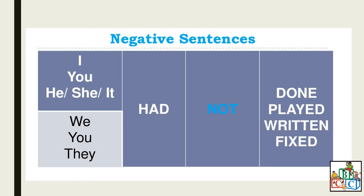For the negative sentences: I, you, he, she, it, we, they — 'had not' for the past perfect, plus the past participle. The verbs are: done, played, written, fixed. We are going to see some examples.